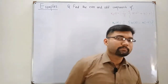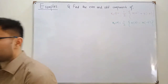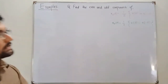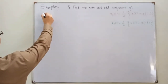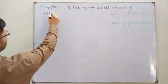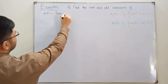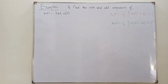Bismillahirrahmanirrahim, Assalamu alaikum. Welcome to Salah Khan's YouTube channel. Today we have maybe the last example on even and odd components of a signal. The question I take is: x(t) is equal to sine of t times u(t).